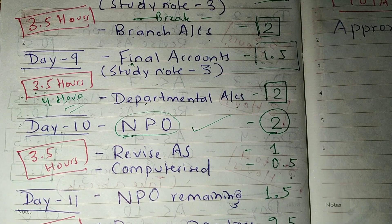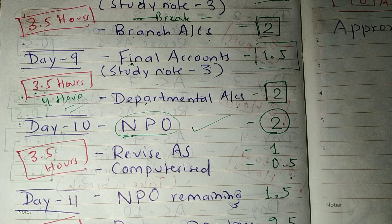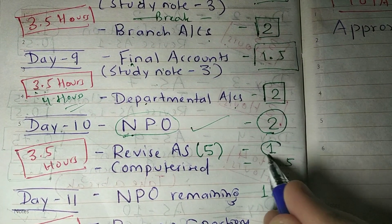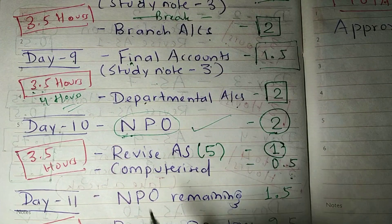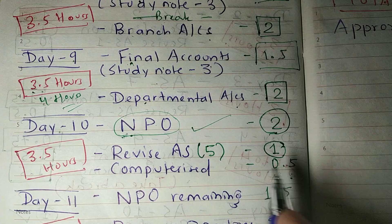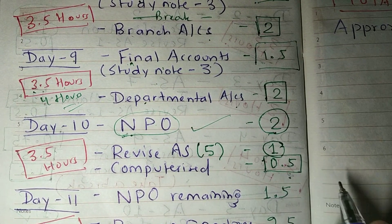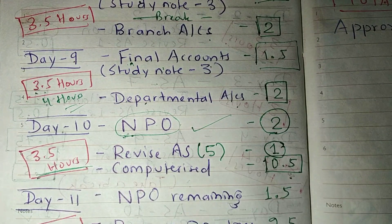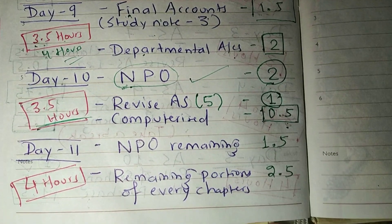After NPO on Day 10, you also need to revise all the accounting standards covered so far — all five — because if you don't revise them at least once more, you'll forget them. I've kept a margin of 30 minutes so that if any topic takes extra time, it can be adjusted. Day 10 will also take approximately 3.5 hours.